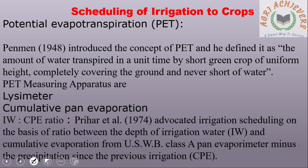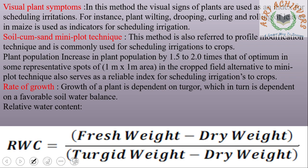IW/CPE Ratio: Prihar advocated irrigation scheduling on the basis of the ratio between the depth of irrigation water and cumulative evaporation from USWB Class A pan evaporimeter minus the precipitation since the previous irrigation. Visual Plant Symptoms: In this method, the visual signs of plants are used as an index for scheduling irrigation. For instance, plant wilting, drooping, curling and rolling of leaves in maize are used as indicators for scheduling irrigation.